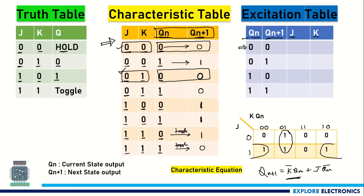In these two cases, J is 0. So let me write J as 0. K is changing from 0 to 1, so K is not the same — we need to write X. If it is changing, we need to write X.